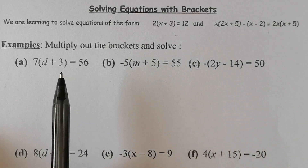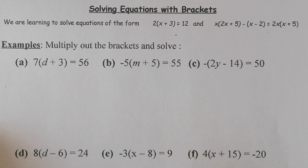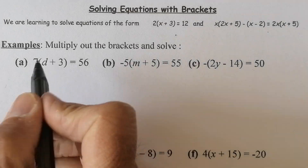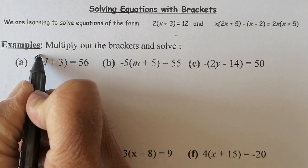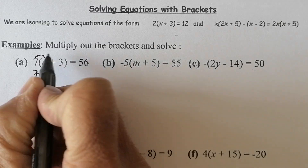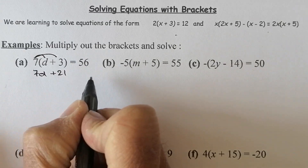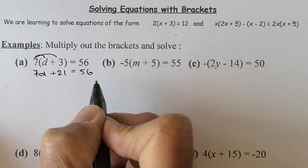Let's start with the questions we have here first of all. Remember when we're working with brackets, what we're going to do is multiply the brackets out first of all. So multiplying the bracket out: 7 times d is 7d, 7 times 3 is 21.